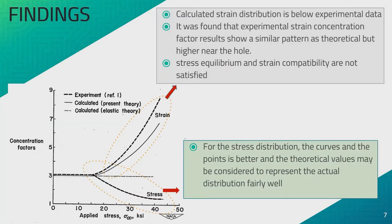Here are the findings of the study. The graph shown is the stress and also the strain under the concentration factors versus applied stress. First, we look at the strain curve between the theoretical data and also experimental data. The graph shows that the calculated strain distribution, which is the theoretical data, is below the experimental data. It was found that experimental strain concentration factor results show a similar pattern as theoretical, but higher near the hole. As concluded, the stress equilibrium and strain compatibility are not satisfied.